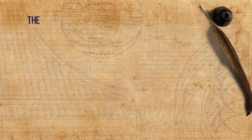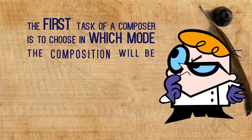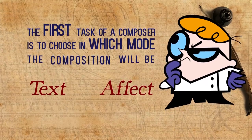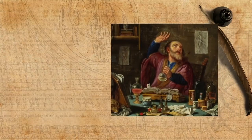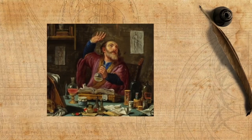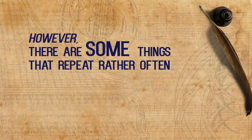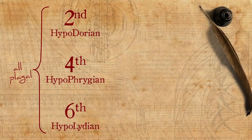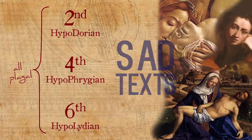When composing a piece, the first task of a composer is to choose in which mode the composition will be. He is expected to do so according to the text and desired effect of the piece, and when relevant, according to the liturgical context. Theorists supplied us with information concerning what effect is appropriate for each mode, but of course the opinions are rather varied. However, there are some things that repeat rather often. The second, fourth and sixth modes — the plagal modes — are often referred to as appropriate for sad texts, because they are lower than their authentic counterparts.